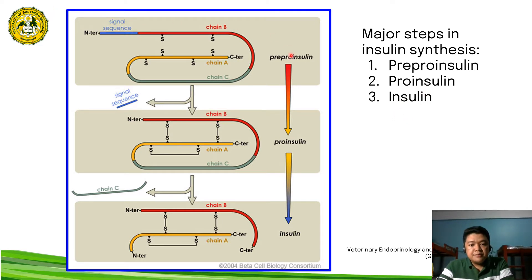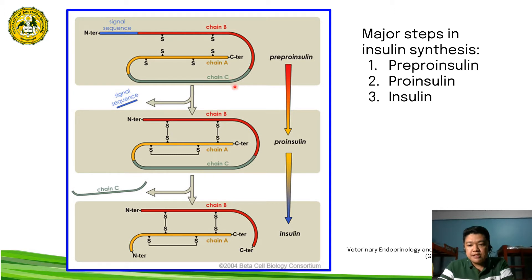These are the components of the preproinsulin compound. We have the signal sequence, the B chain, the A chain, and the C chain. The B chain contains the amino terminal or N terminal. The A chain contains the C terminal or carboxy terminal. The domain that connects the A chain and the B chain is known as the C chain.